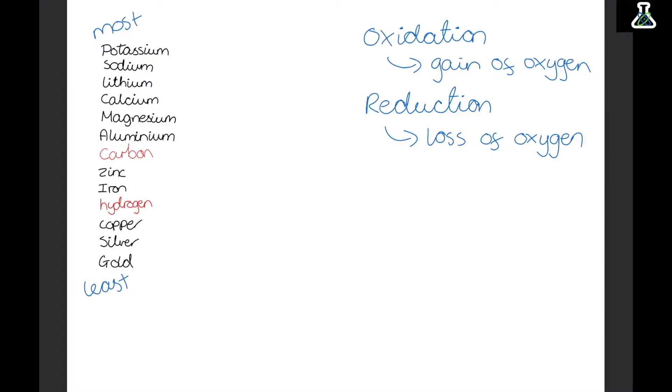The top four metals can also react with cold water. So potassium, sodium, lithium and calcium can react with cold water. And again potassium will react the most and calcium will react the least. If we react a metal plus water we get the metal hydroxide plus hydrogen. So if we react sodium with water we'll get sodium hydroxide plus hydrogen.